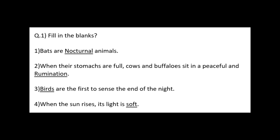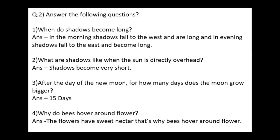Question number 2: Answer the following questions. 1. When do shadows become long? In the morning, shadows fall to the west and are long, and in the evening shadows fall to the east and become long. 2. What are the shadows like when the sun is directly overhead? Shadows become very short.